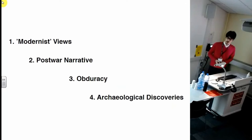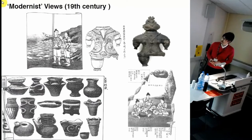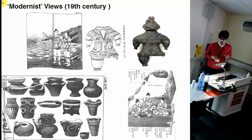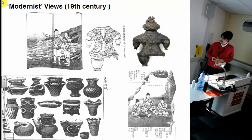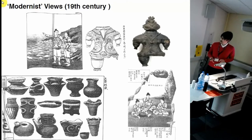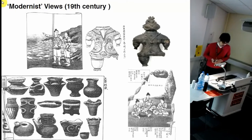I'm suggesting four keywords to think about this topic. Firstly, modernist views of the 19th century. One of the roots of Japanese archaeology stems from the pre-modern antiquarian. So in the 19th century, these artifacts were well known among the public. Questions like what are these artifacts, who made them, and how to reconstruct ancient life based on them were already a hot topic.